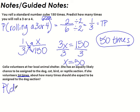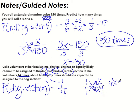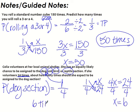Let's find the probability of the dog section. There are four sections total, and dog is just one of them, so the theoretical probability is 1/4. Now we use a proportion: 1/4 equals x over 24. Cross multiply: 4x equals 24. Divide by 4, and we get x equals 6. So she should expect to be assigned to the dog section about 6 times.